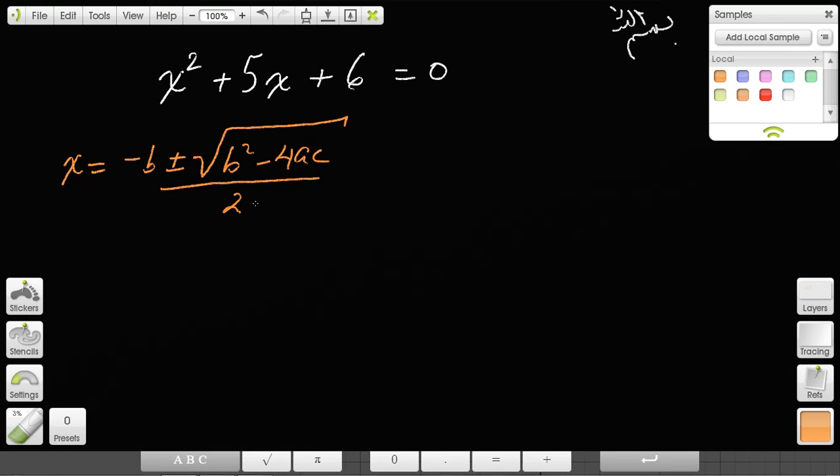It's a good habit and good mathematical manners to write the formula before you start using it. So negative b—b here is 5, so it's -5—plus or minus square root of b², which is 5² = 25, minus 4 times a, which in this case is 1, times c, which is 6, all over 2 times a, which is 1. Basically, just put everything in the formula.